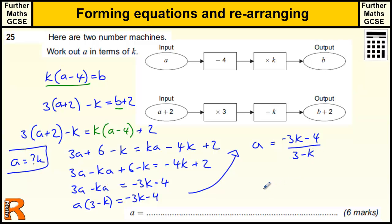And there we have the answer. Now that's not very neat, but that is perfectly fine. What we could do is change all these signs. If we multiply by minus 1, we change the signs on the top to get 3k plus 4, and we multiply the bottom by minus 1, we end up with minus 3 plus k, or k minus 3.